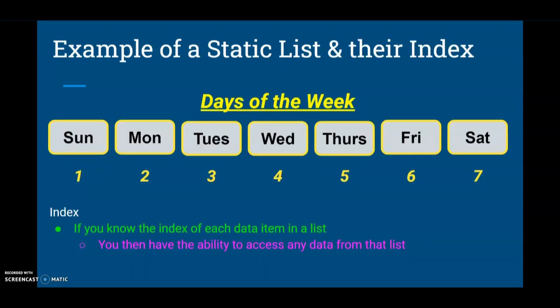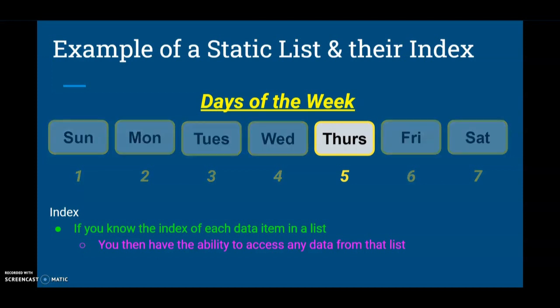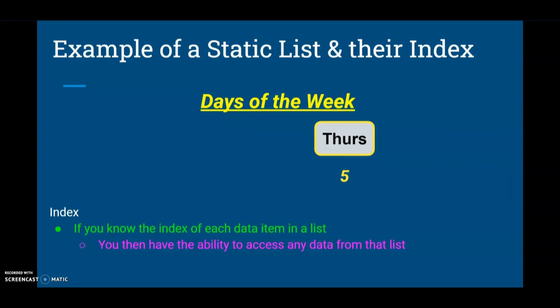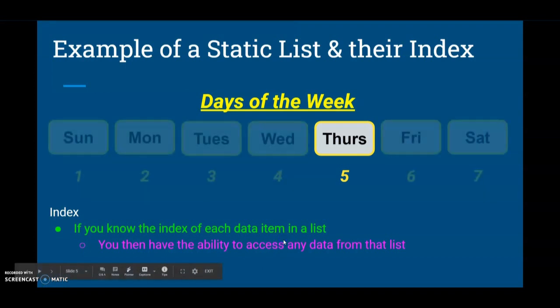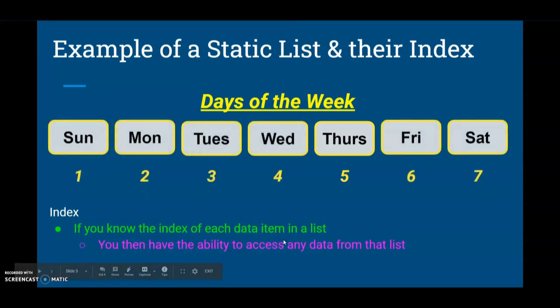Here's an example of a static list and its index. We've created a list of the days of the week — Sunday through Saturday. The index is the position of each data item, so Sunday has an index of one, Monday an index of two, Tuesday an index of three, and so on. You have the ability to access any data from the list if you know the index number. For example, if we call index five, Thursday would be returned to us. This is true for any of the days of the week or any list items in any list you have created.